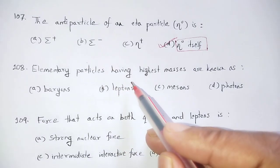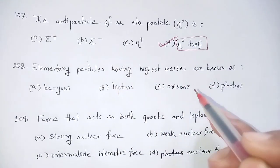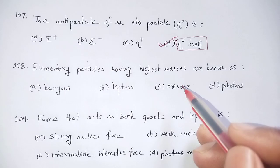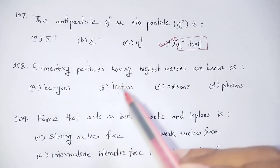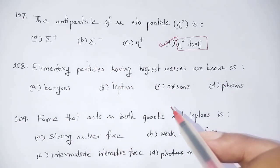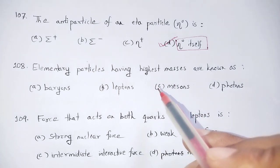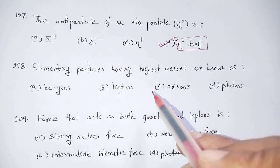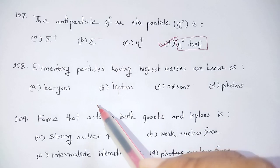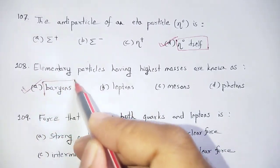Elementary particles having the highest masses are known as baryons. Options: baryons, leptons, mesons, photons. Baryons have the most mass — baryons are the most massive elementary particles.